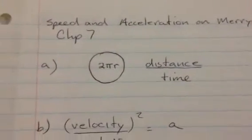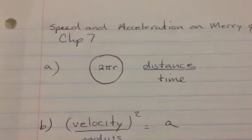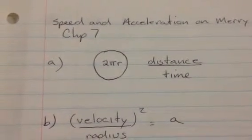Okay, this is Chapter 7, Merry-Go-Round. In the first part, they want to know what is the velocity. Again, that's distance divided by time, and your distance is 2πr. So whatever the radius is, times 2π.